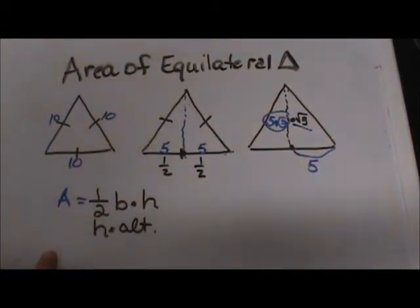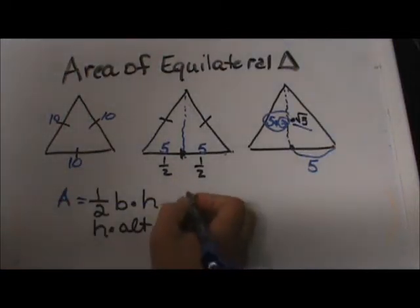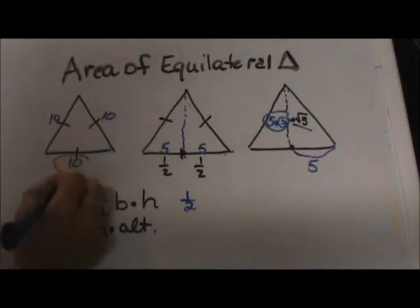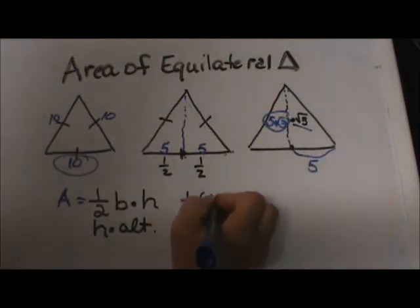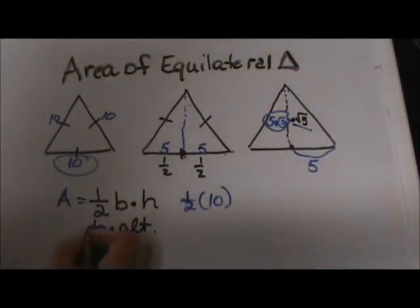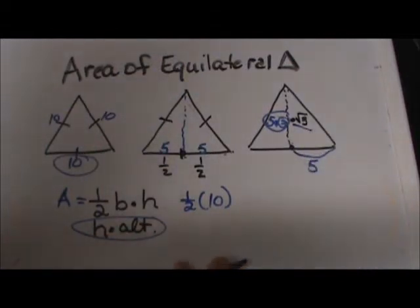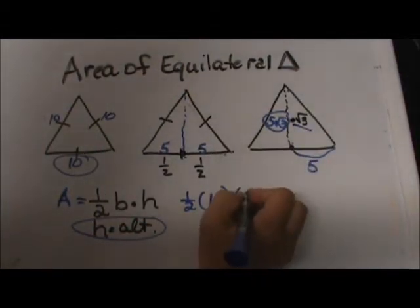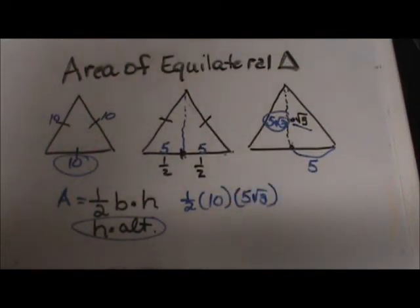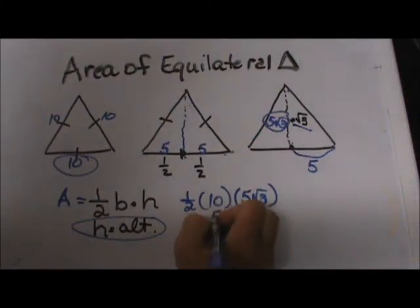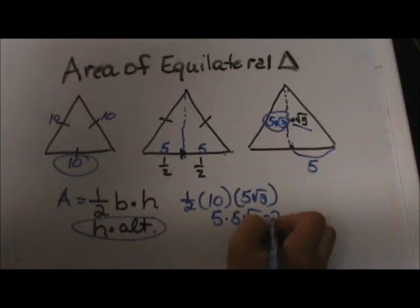Now I am going to take those and plug them into this formula. To find the area, I am going to have one half the base. Well, the base is 10, so I am going to plug in 10. The height is our altitude. We just figured out our altitude is 5 square root 3. So we are going to take 5 square root 3 and we multiply all that together. So half of 10 is 5, and 5 times 5 times the square root of 3 is 25 square root 3 square units.